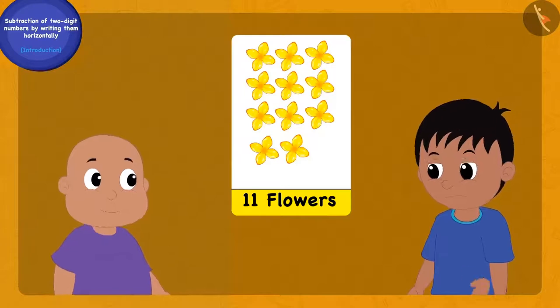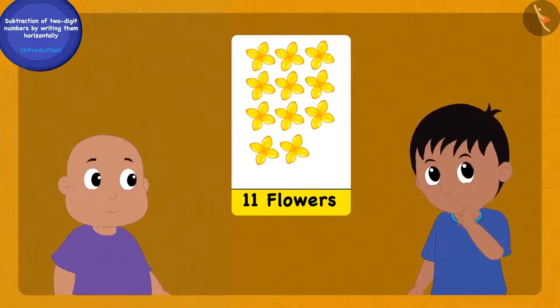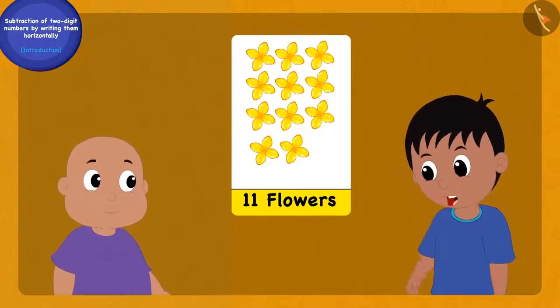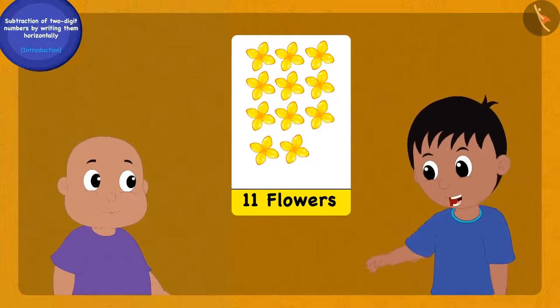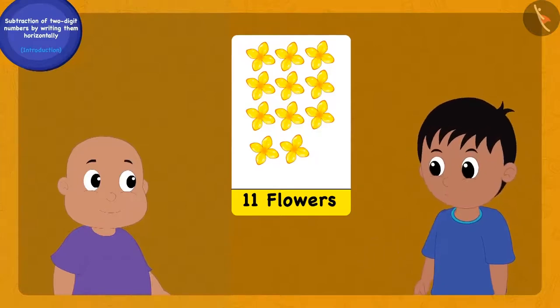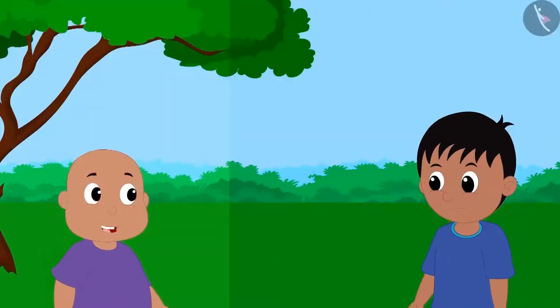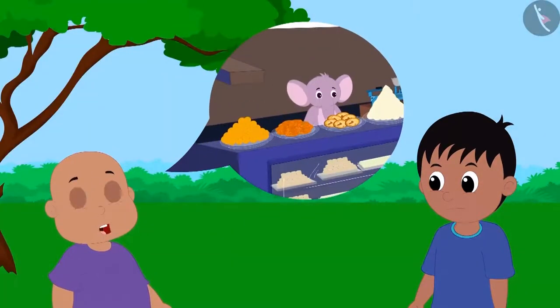Did you understand, Raju? Raju still could not understand clearly. Can you explain that to me with another example? Raju said to Bablu. Let's go to Appu's sweet shop.